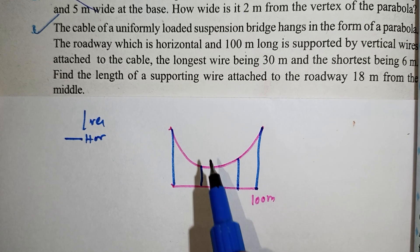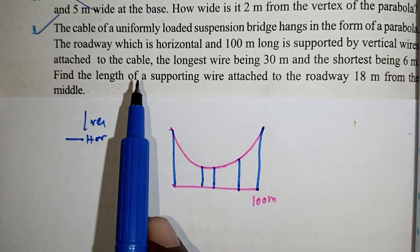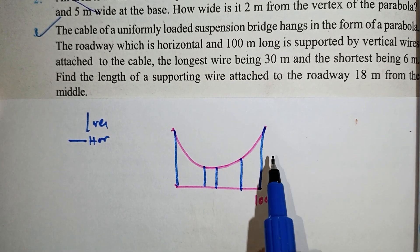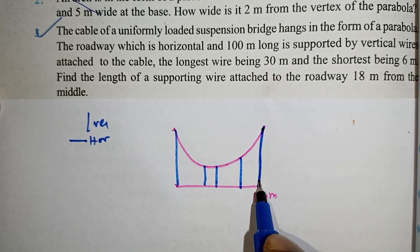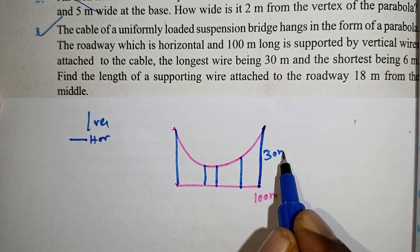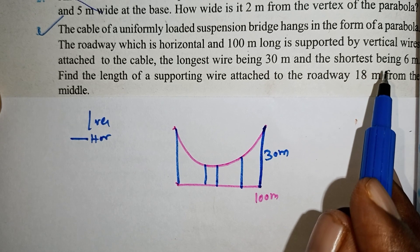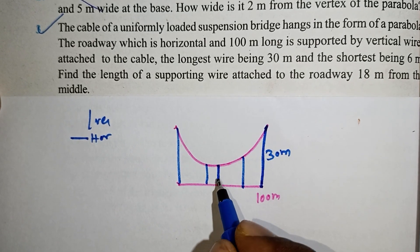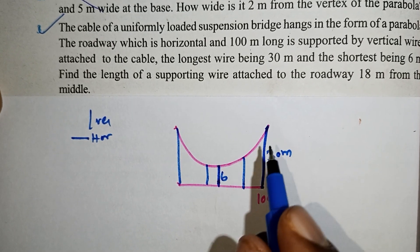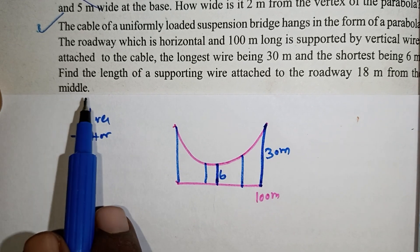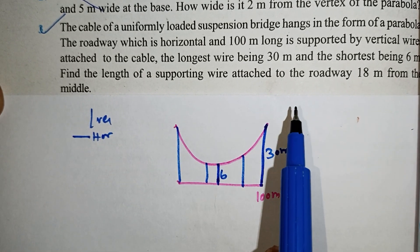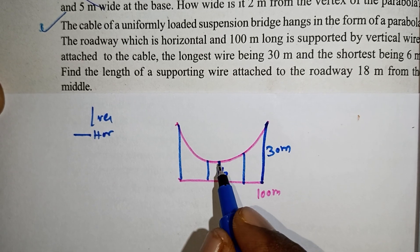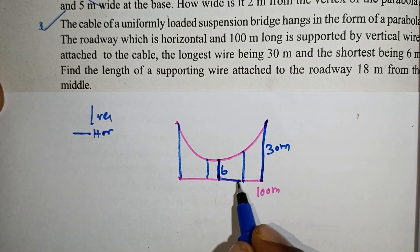The longest wire is 30m, located at the end of the bridge. The shortest wire is 6m. The length of the supporting wire attached to the roadway is 18m from the middle.